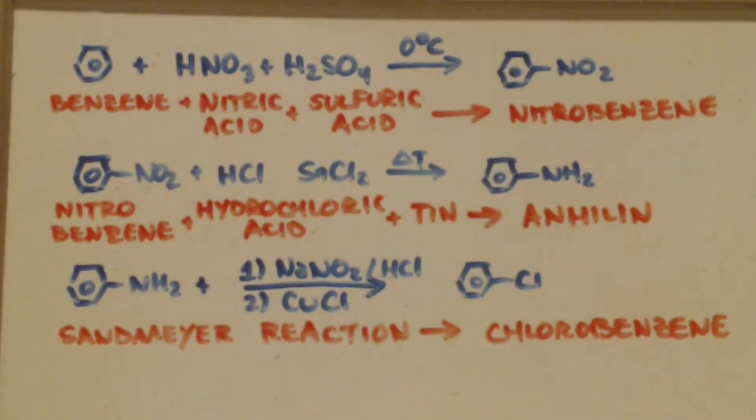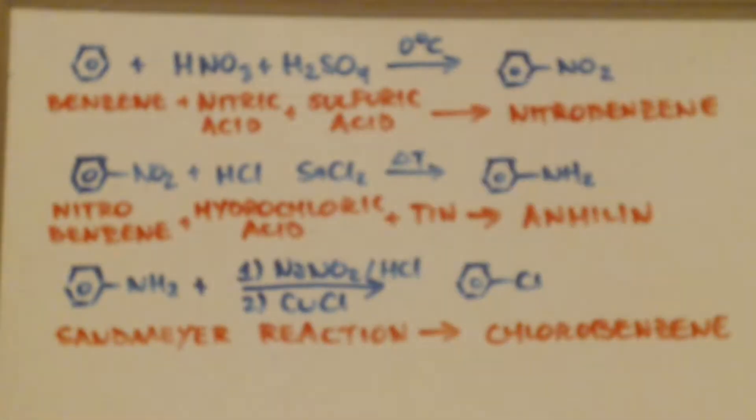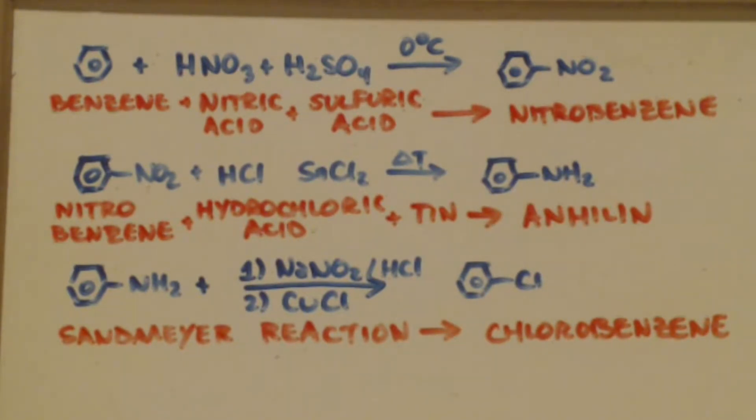You take your aniline, you do the Sandmeyer reaction, get some sodium nitrate, hydrochloric acid, and then step two, you do some copper(I) chloride, and you'll end up with - you replace the amine with an azo compound. The azo breaks apart with the copper chloride and the chloride adds on and replaces the azo compound with the halide. This is a nice reaction too. You definitely aren't gonna get any extra nitration. You're only gonna put one nitro group on, that's for sure, because this nitro group is a very deactivating group.